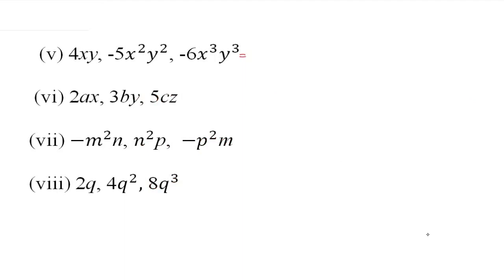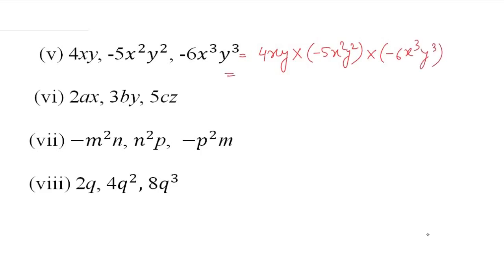Next: 4xy multiply by (−5x²y²) multiply by (−6x³y³). सबसे पहले numbers को multiply करते हैं: 4 × (−5) = −20, फिर −20 × (−6) = 120 (negative × negative = positive). अब variables को multiply करेंगे separately.